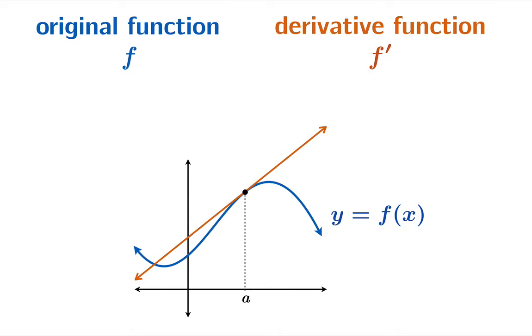So here's our picture. At the argument a, the value of the function is f of a, and the tangent slope is given by the value of the derivative function f prime of a.